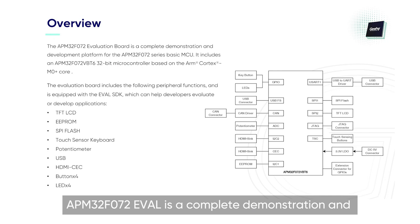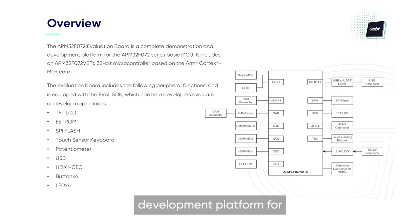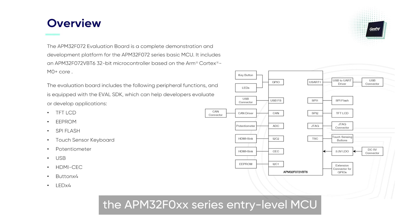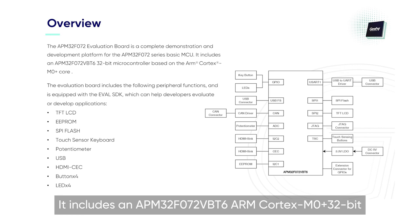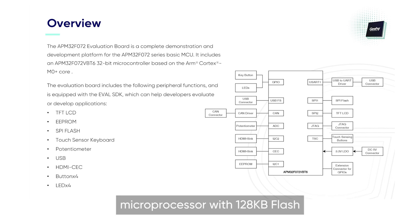APM32F072EVAL is a complete demonstration and development platform for the APM32F0XX series entry-level MCU. It includes an APM32F072VBT6 ARM Cortex-M0 plus 32-bit microprocessor with 128 kilobytes of flash.